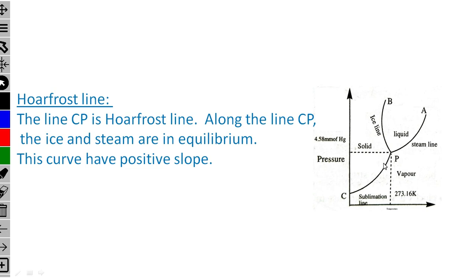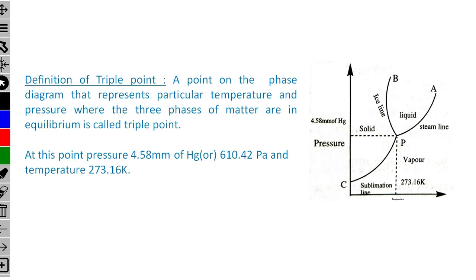This completes the explanation of the triple point of water. To summarize: there are three lines — the ice line with a negative slope, the steam line with a positive slope, and the hard-frost line with a positive slope. This is a four-mark answer with the diagram and all data information.